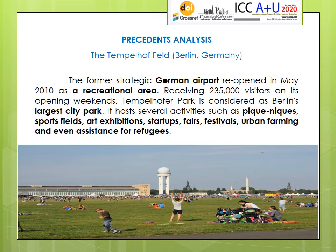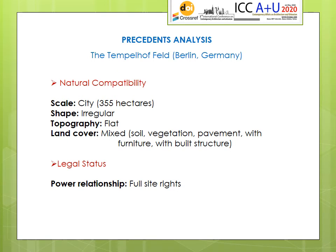The second case is the Tempelhofer Feld, the former German airport that reopened in 2010 as a recreational area receiving thousands of visitors. It is considered the largest city park, hosting activities such as picnics, sports fields, art exhibitions, fairs, festivals, urban farming, and even assistance for refugees. This park is city-scale at 355 hectares, with a regular shape, flat topography, and mixed land cover combining soil, vegetation, pavement, urban furniture, and built structure. For the legal status, it is a full-rights situation since the municipality of Berlin both owns and manages the park.